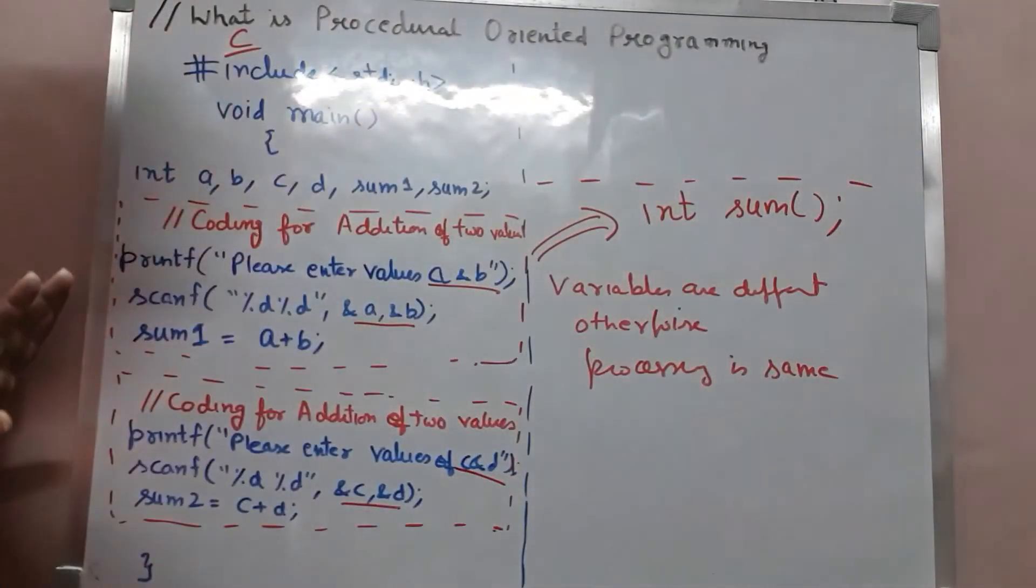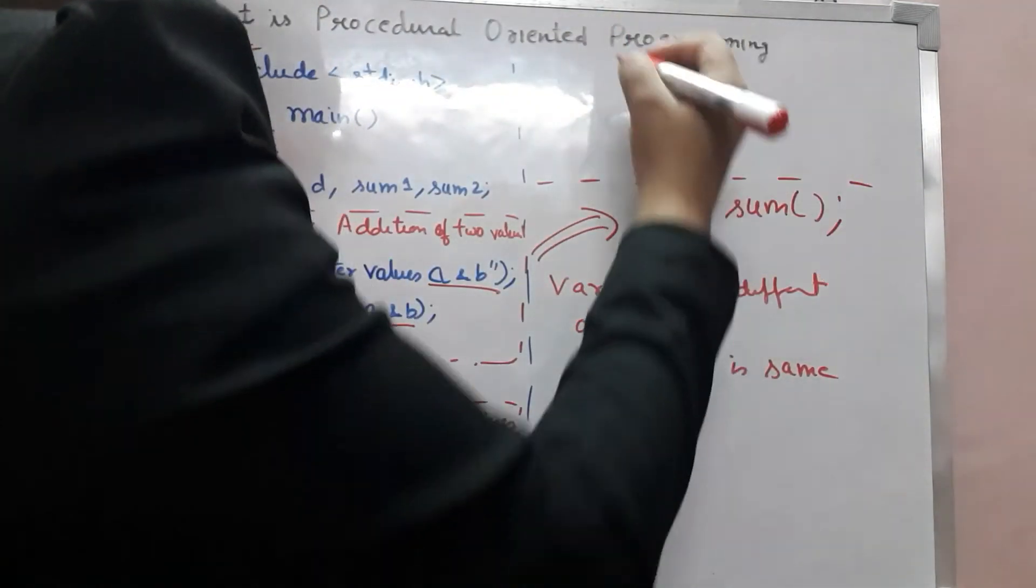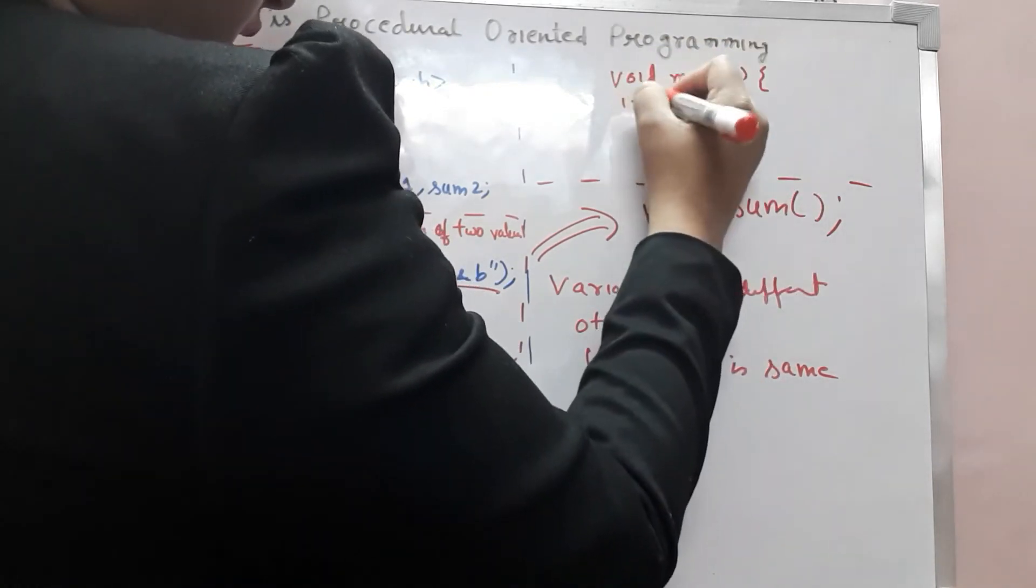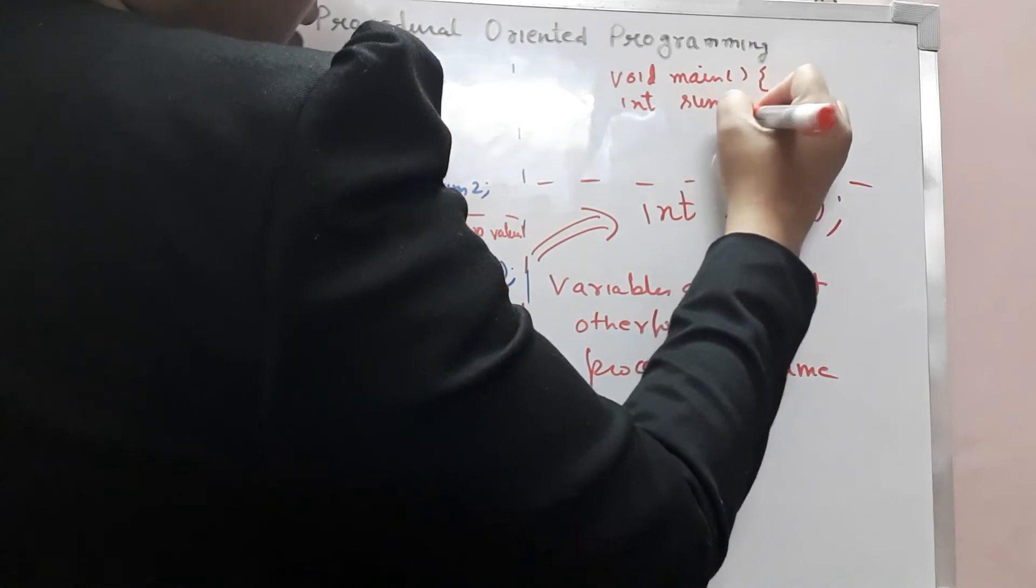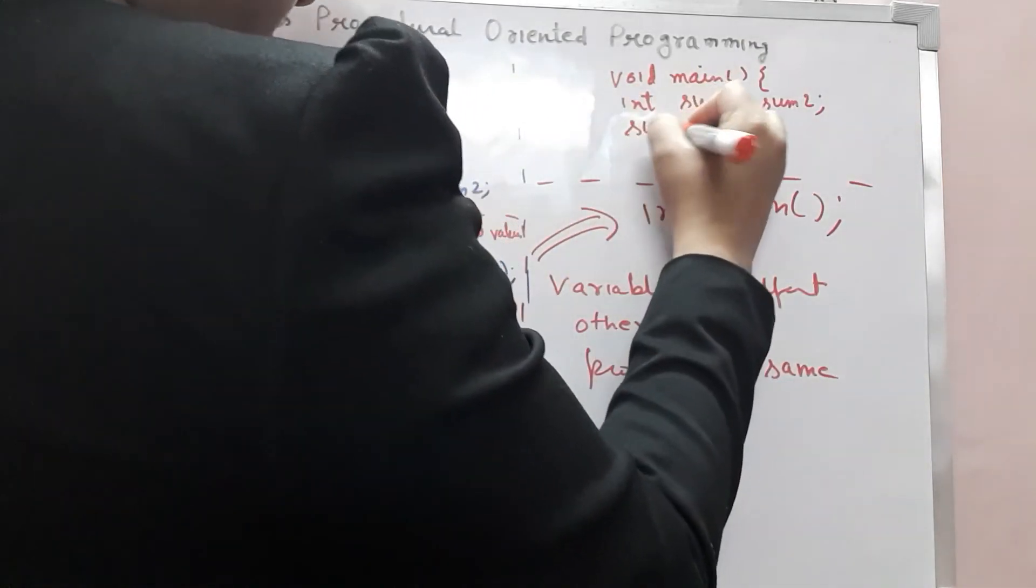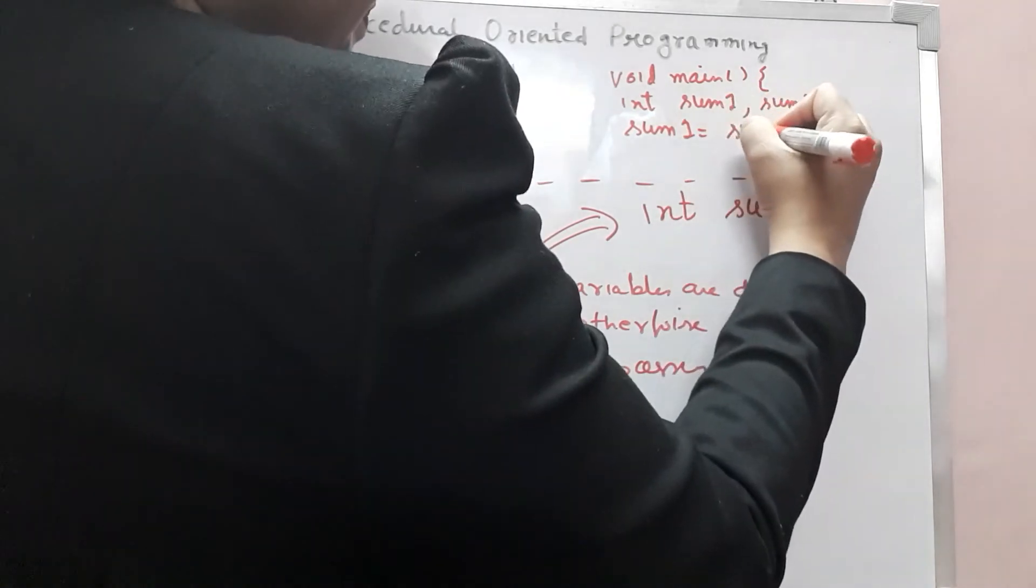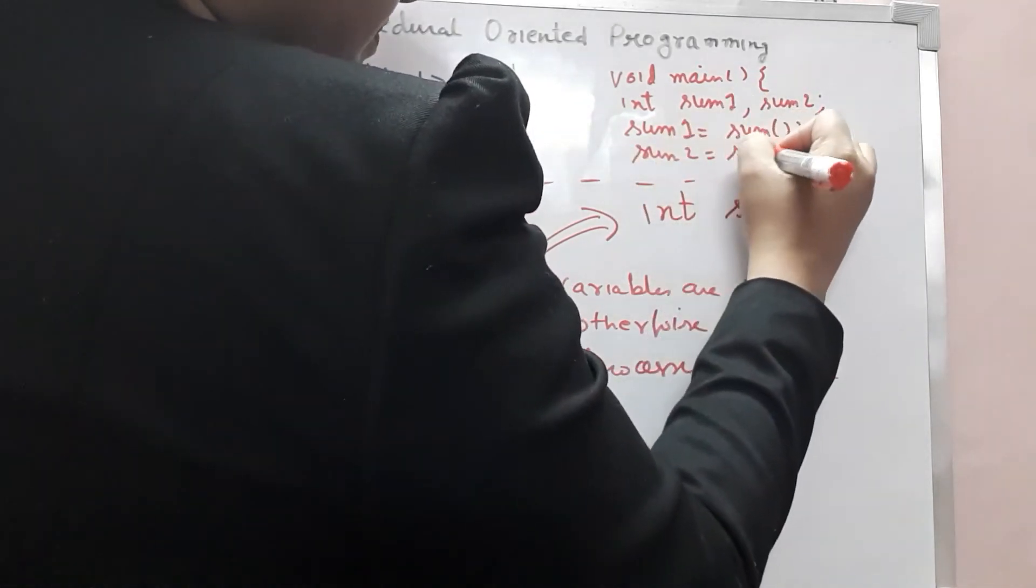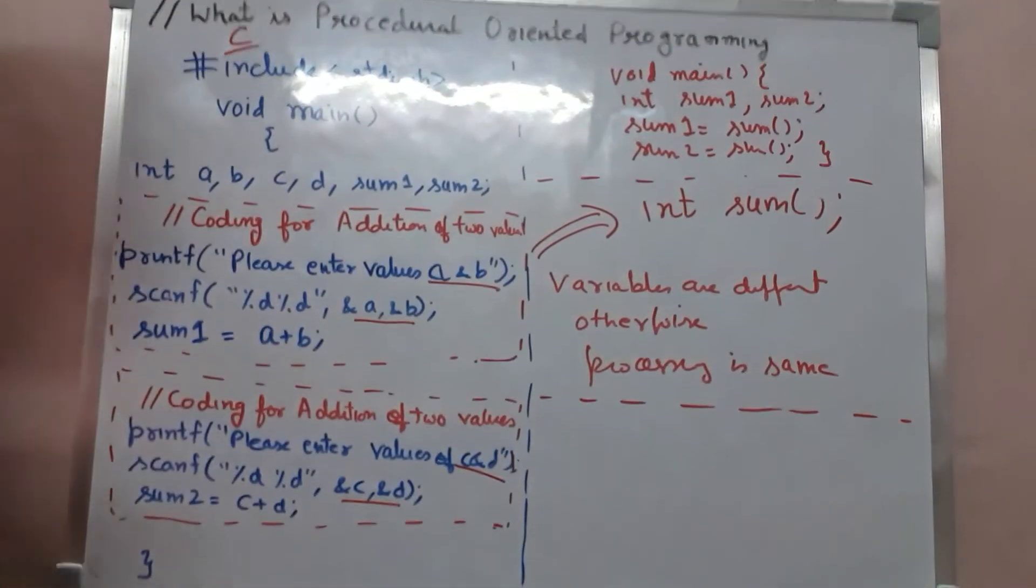Int sum1, sum2. Sum1 equals sum. Sum2 equals sum. And ending. These are the ending points.